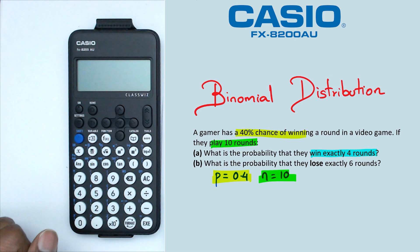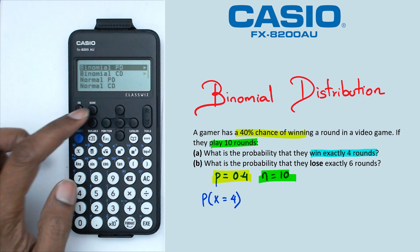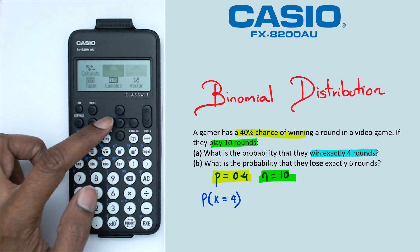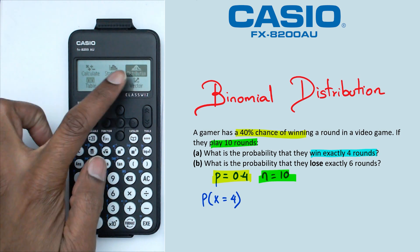Now the first question is asking for winning exactly four rounds. So for that we've got probability of X is equal to 4. So to do this on this particular calculator, we want to switch on the calculator, press the home button, and navigate our way to distribution.